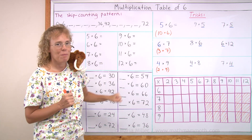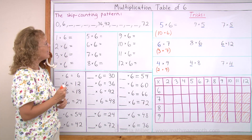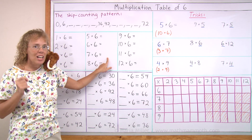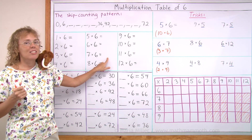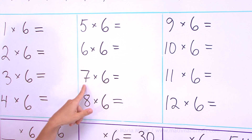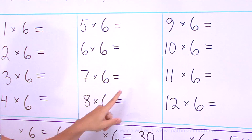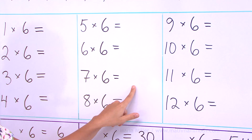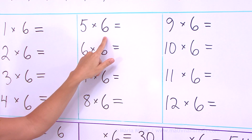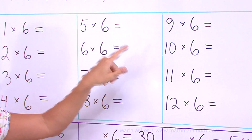I also want you to remember or notice that each answer here is a double of the corresponding answer in the table of 3. So, for example, 7 times 6 — you can think of 7 times 3, if you remember that. It's 21, so double 21 gives you 42. Or 5 times 6: think of 5 times 3, that's 15, and double 15 is 30.